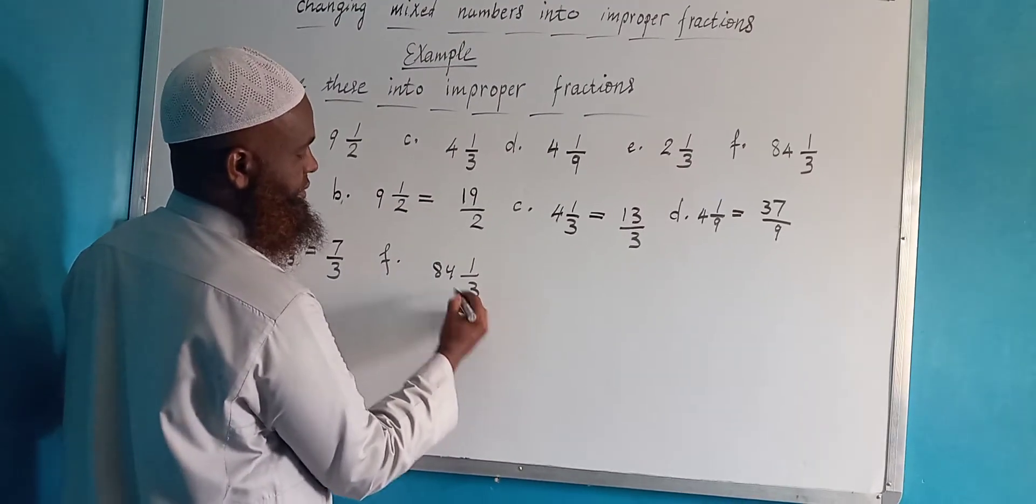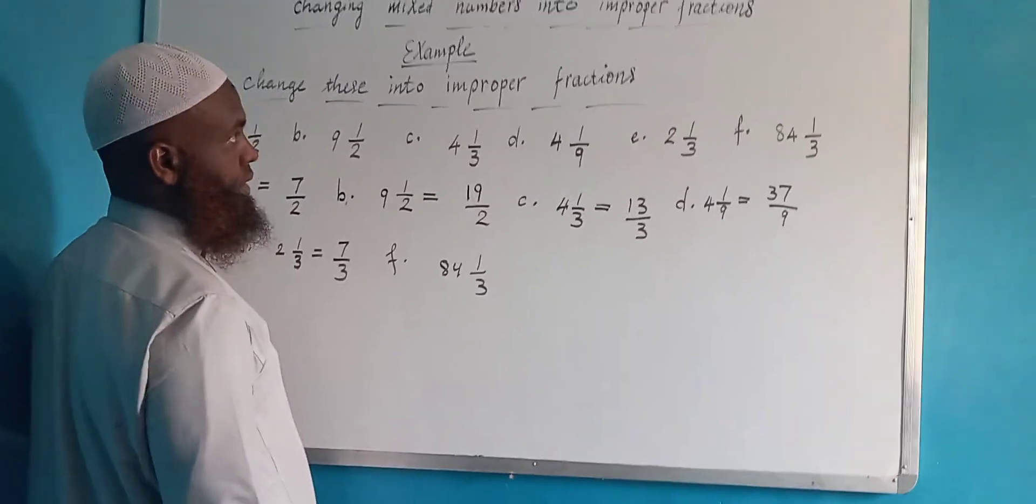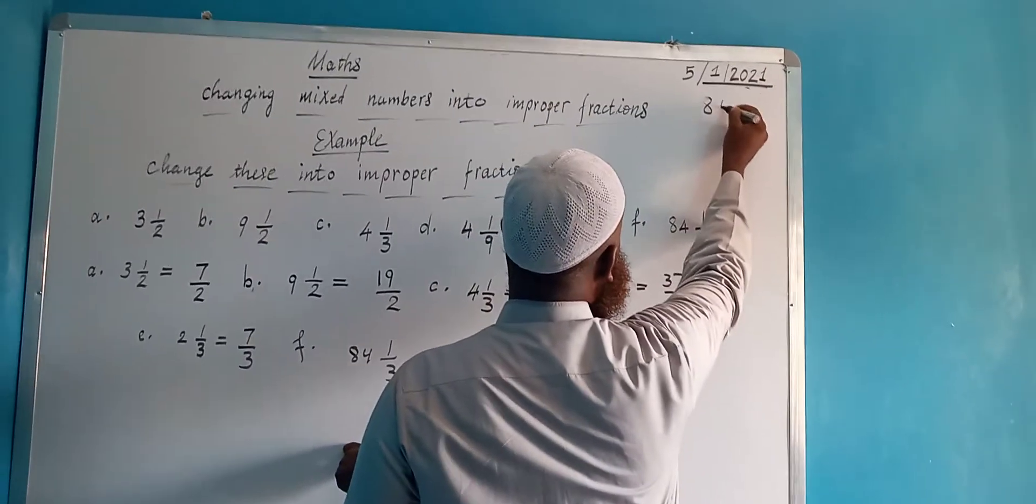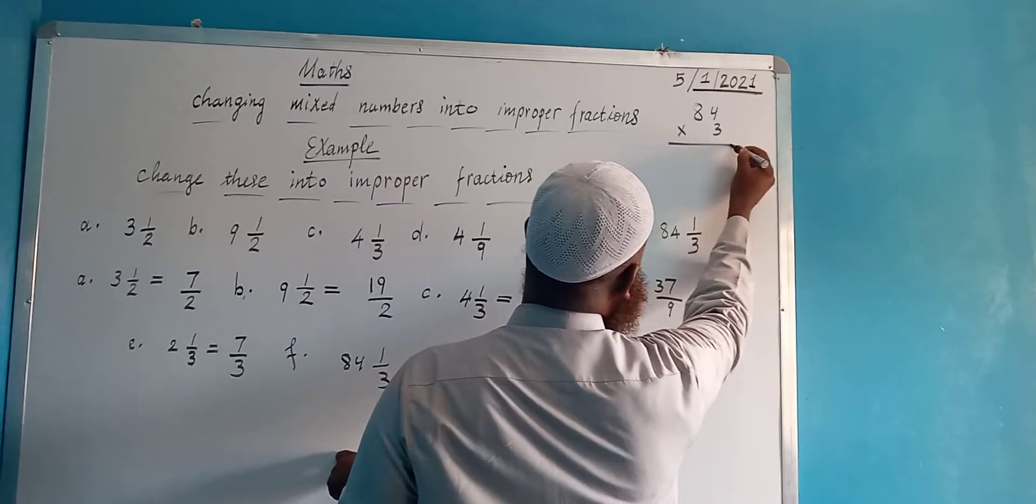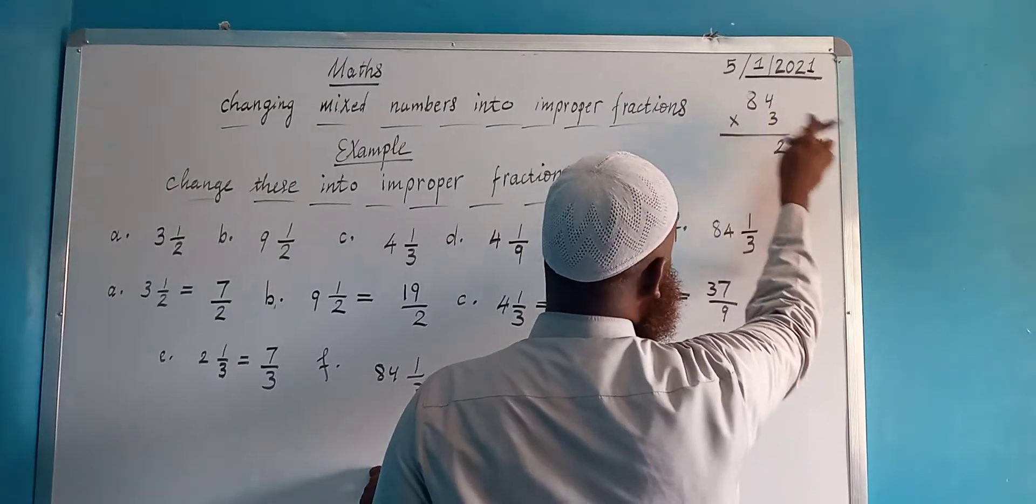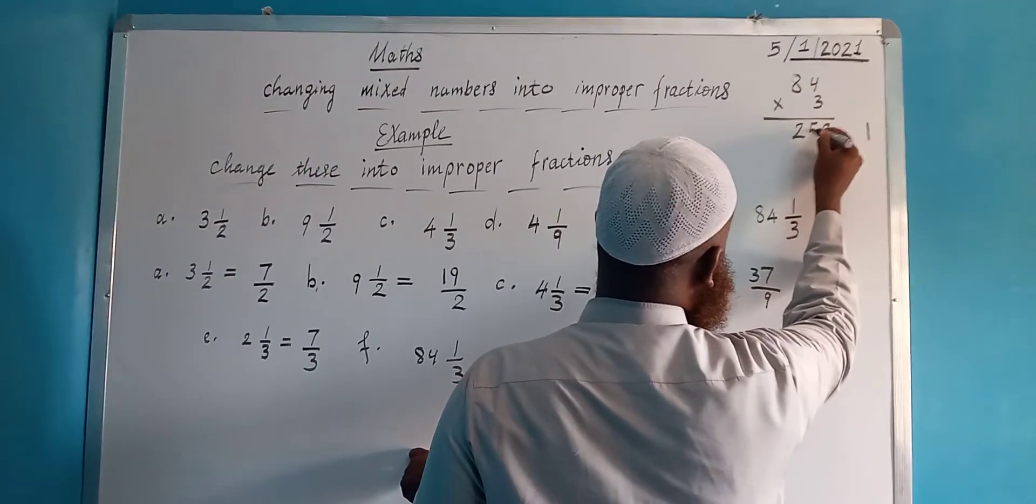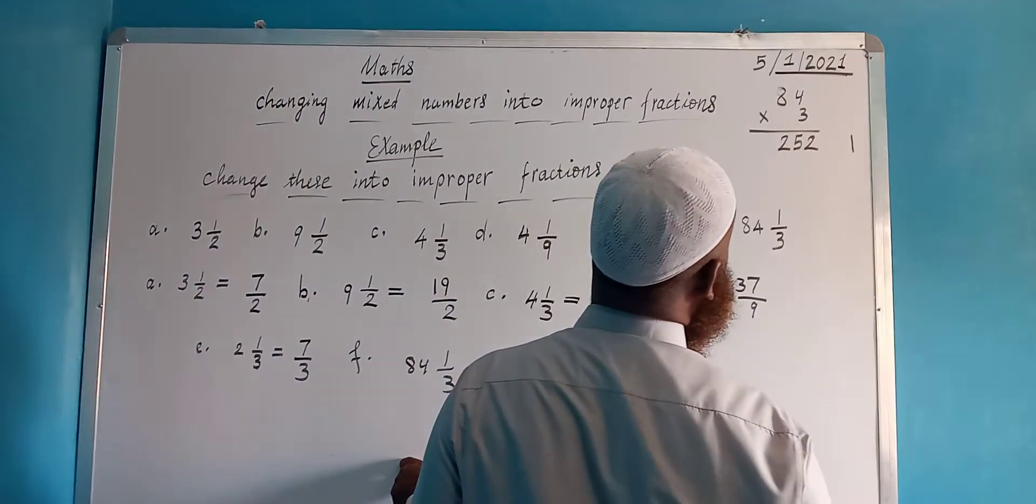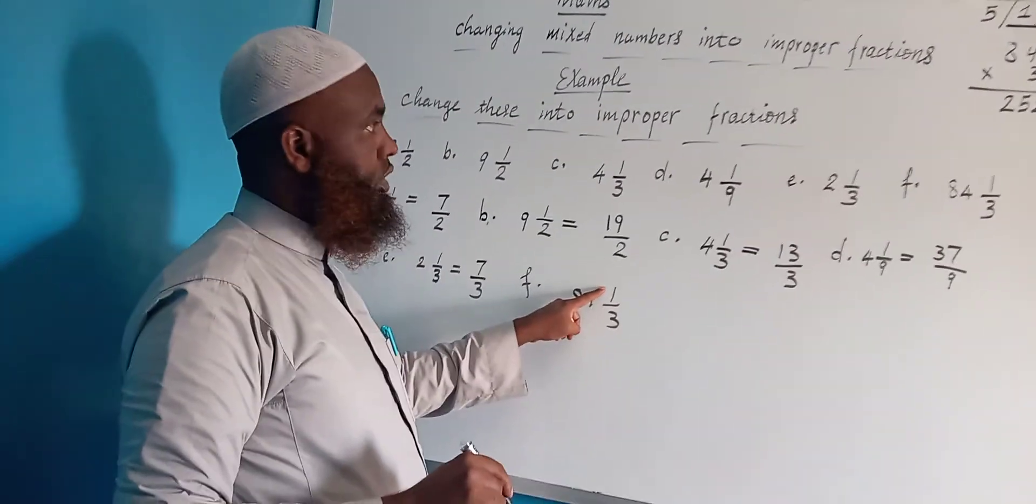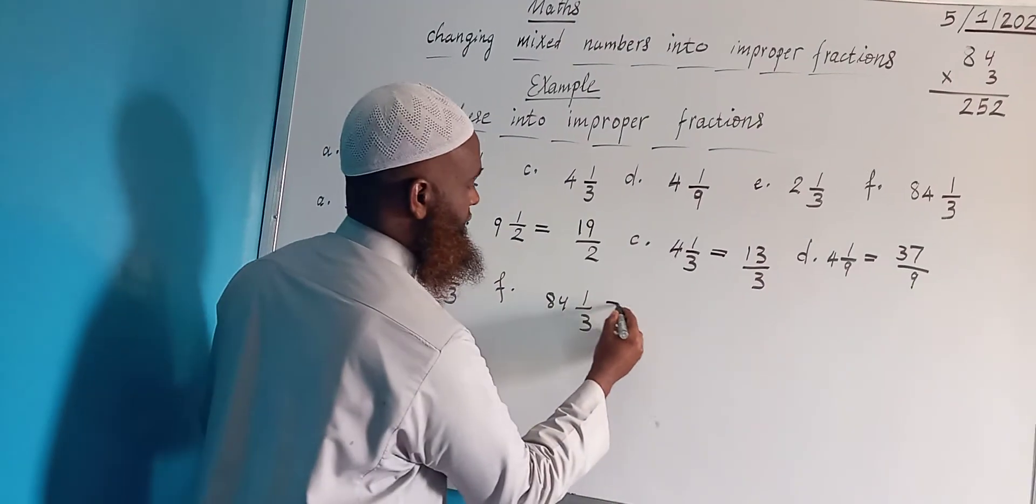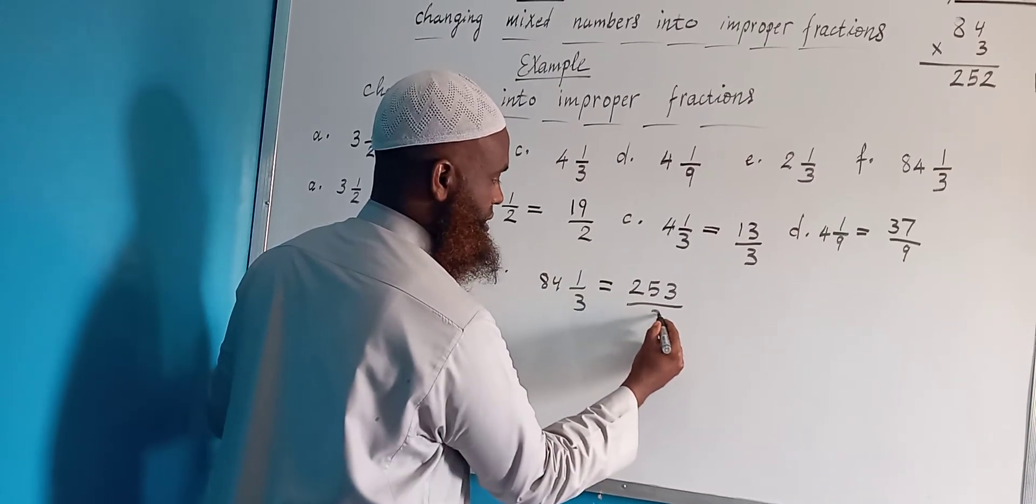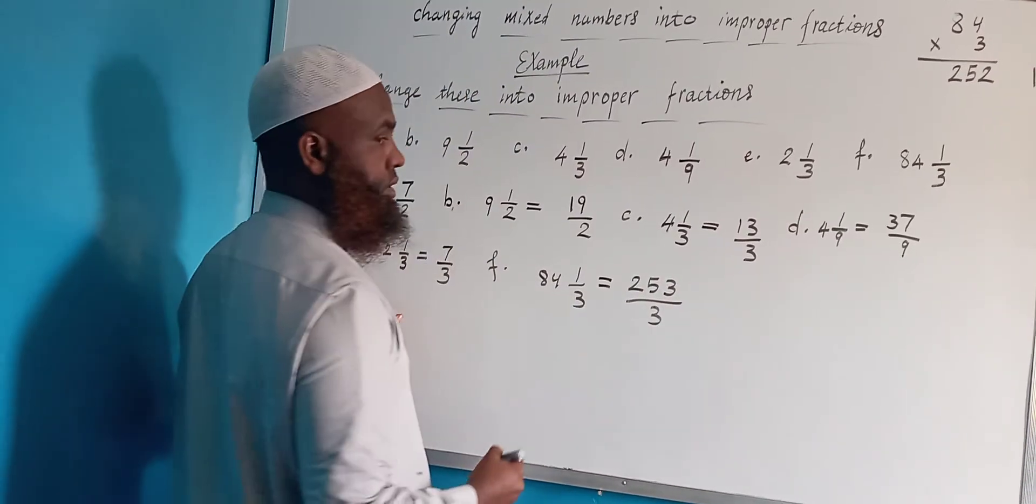84 times 3, okay, 3 times 84. Then we got 3 times 4 is 12, carry 1, 3 times 8 is 24, 24 plus 1 is 25. Then we have 4 times 2, we have 4 times 3, we have 6 times 2, now we have 6 times 3. Let's see... That's right.